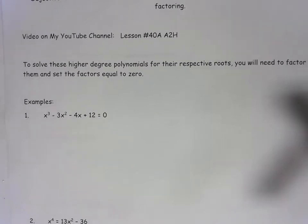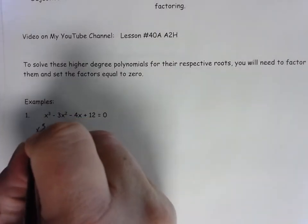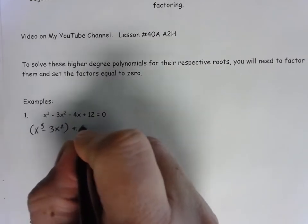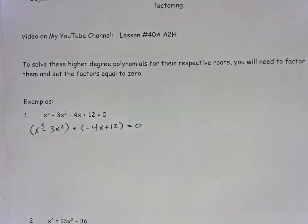For example number one, we have x cubed minus 3x squared minus 4x plus 12. What we can see here, if we use factor by parts, then I can factor the same way we have factored previously when we have four terms.